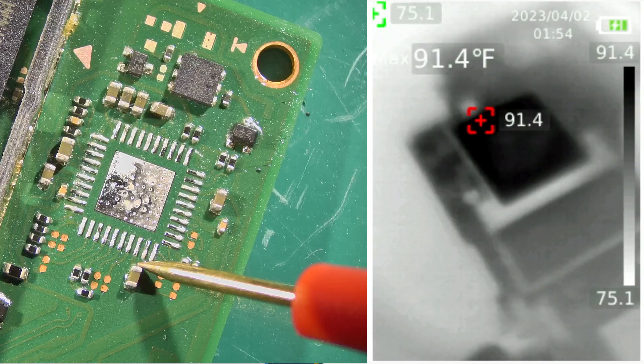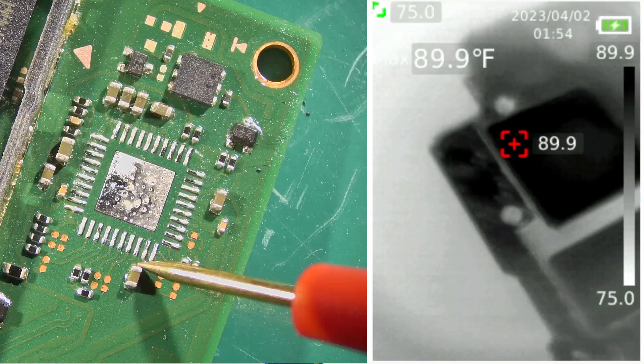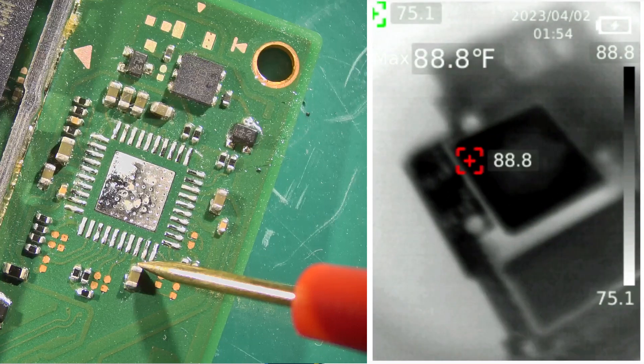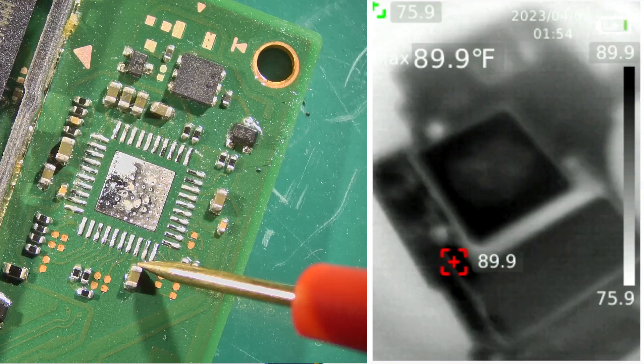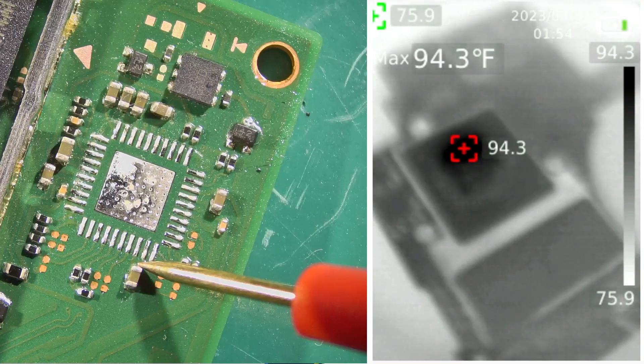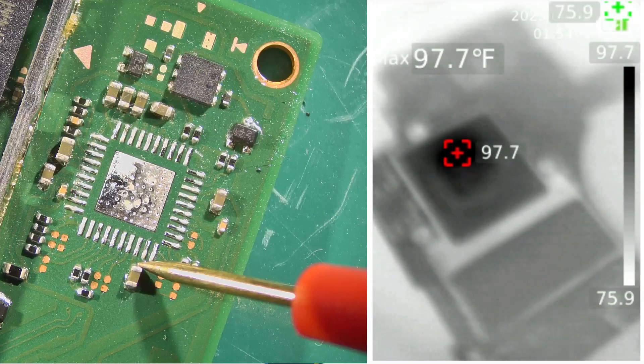You will see how fast the temperature drops when I turn the voltage injection off. It definitely gets warmer when we inject voltage, and the temperature drops when we remove the probe.